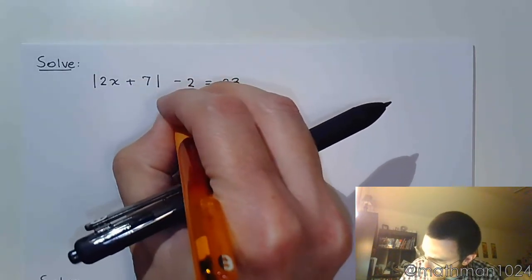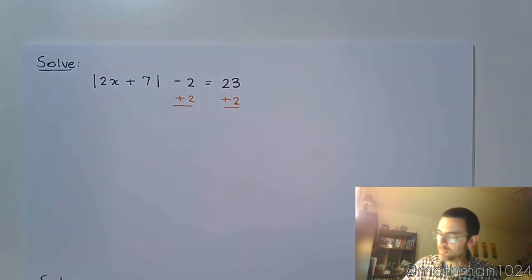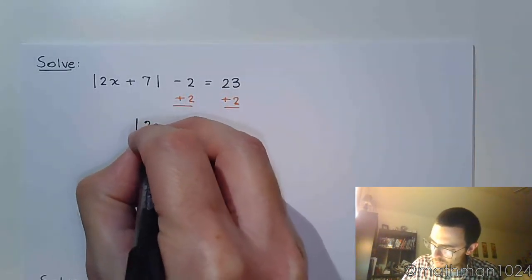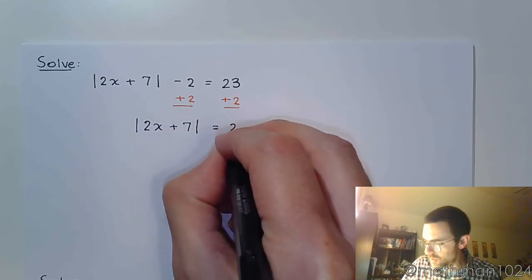So that is just a matter of us adding 2 on both sides, like that. So we get the absolute value of 2x plus 7 is equal to 25.